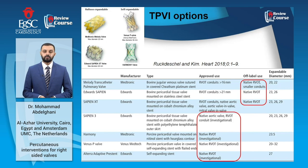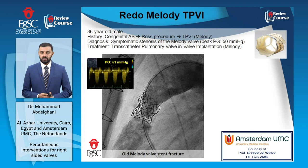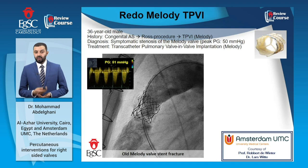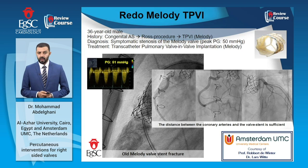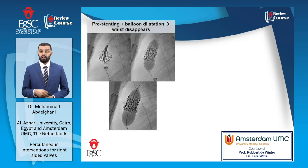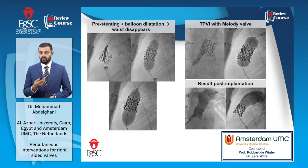This is a case of a 36-year-old male with history of congenital aortic stenosis who underwent surgery followed by transcatheter pulmonary valve implantation using a Melody valve. He recently presented with symptomatic stenosis of the Melody valve, and the heart team decided to offer him redo TPVI with valve-in-valve implantation of another Melody valve. The gradient was 51 mmHg, and there was an obvious fracture of the Melody valve stent. The procedure started with exclusion of coronary artery vulnerability to compression and documenting sufficient distance between the coronaries and the RVOT. This was followed by pre-stenting, balloon dilatation until the waist disappeared, and then another Melody valve was implanted with a favorable final angiographic result.